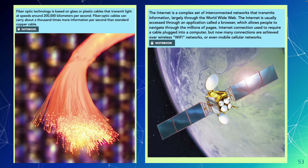The internet is a complex set of interconnected networks that transmits information largely through the World Wide Web, usually accessed through a browser like Safari or Chrome. Internet connections used to require a cable plugged into a computer, but now many connections are achieved over wireless Wi-Fi networks or mobile cellular networks. What is the benefit of how we get internet now, and what is the drawback?